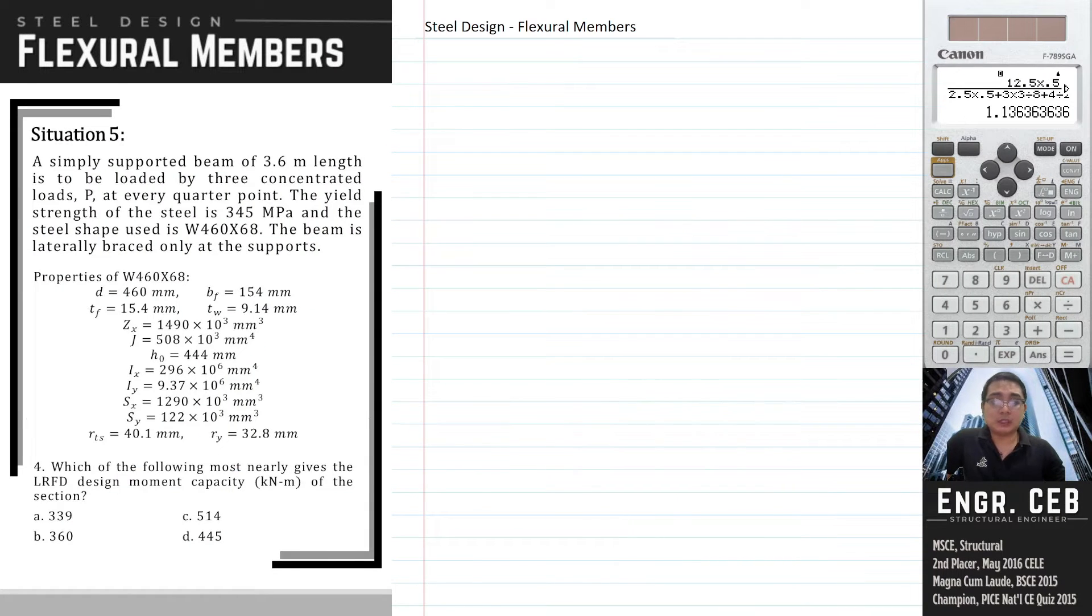Problem 4: Which of the following most nearly gives the LRFD design moment capacity of the section? Before we talk about the moment capacity, we should identify first the limit states to be used in the problem. In order to do that, we need to know the slenderness of each element. So we have to check if the flange is compact or not, as well as the web. Let us check first the compactness of the flange.